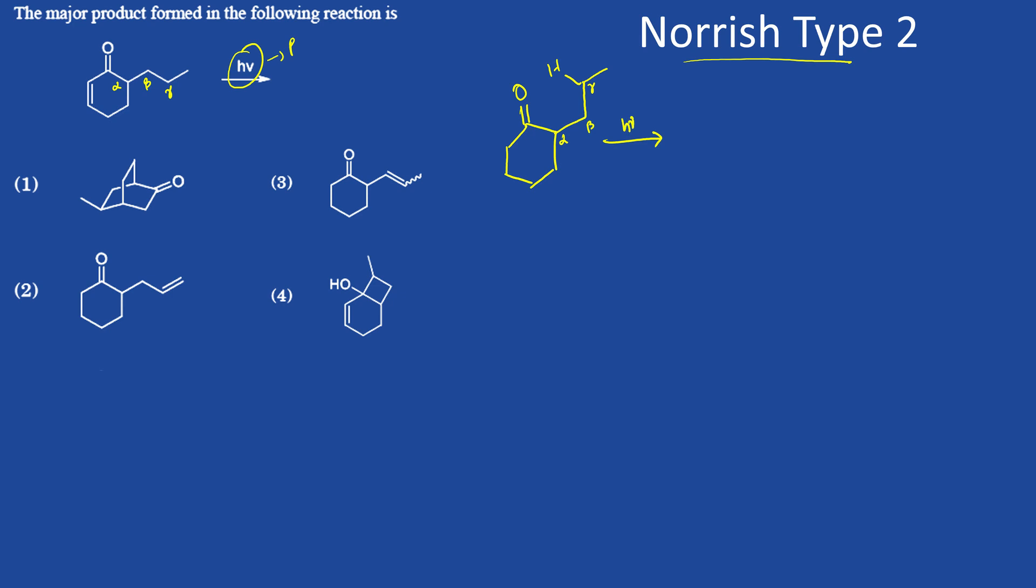First it will form on irradiation with light, it will form a radical like this. So it will form two radicals and then they will abstract this hydrogen. It will abstract this hydrogen and then it will form OH here, and this radical will remain the same like this.